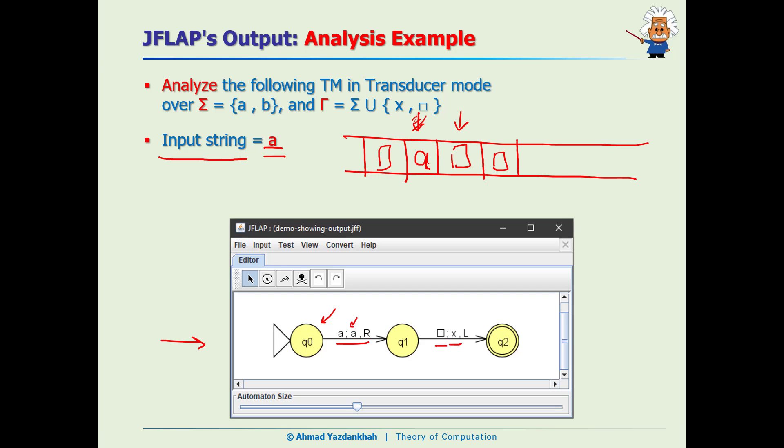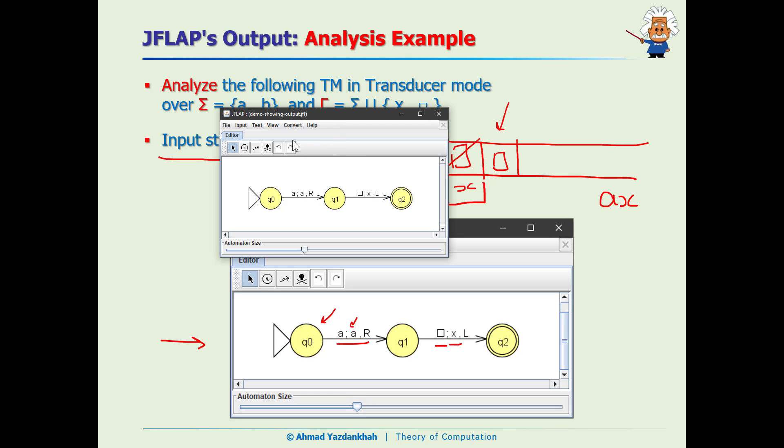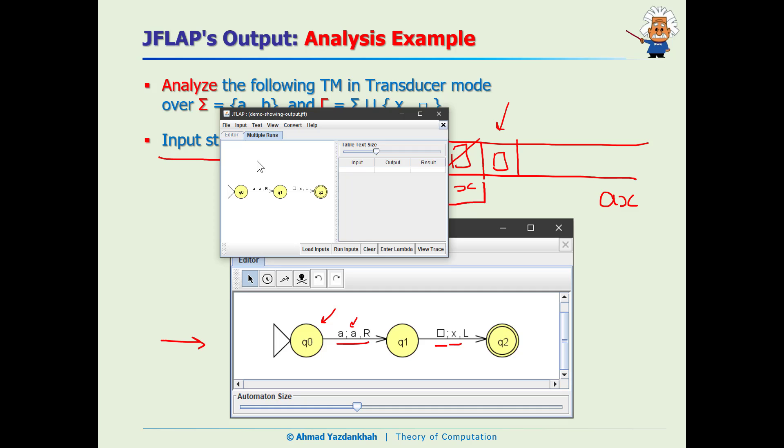This guy will go here. If it is blank, change it to 'x', go to the left. It is blank, change it to 'x' and go to the left. The cursor is pointing to the 'a'. Now the question is what is the output? Based on our definition in the previous slide it will be from here until the first blank to the right, so the output will be 'ax'. Now let me show it from here. We go to Multiple Run and this is 'a', and we run the input, and as you see the output is showing as 'ax'.